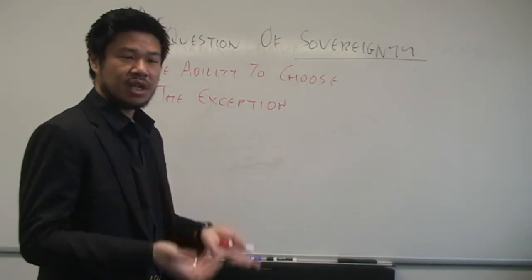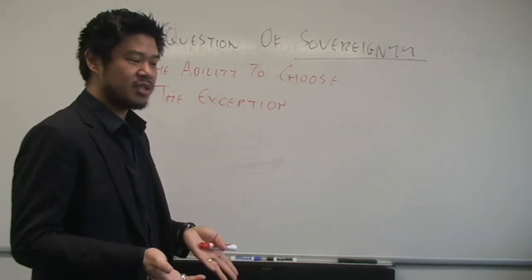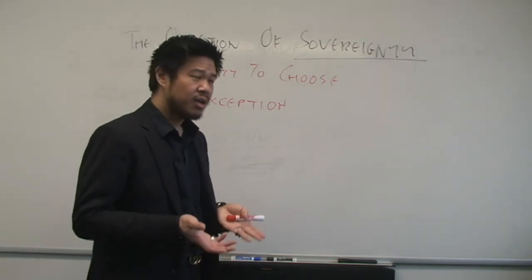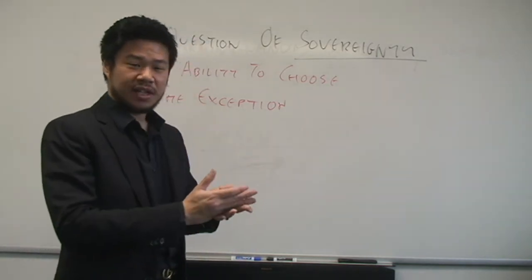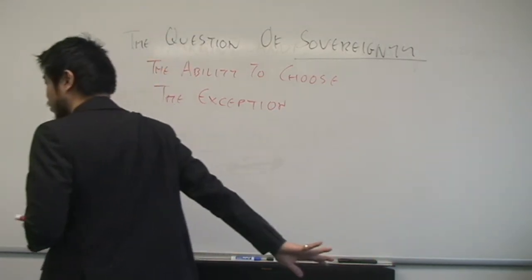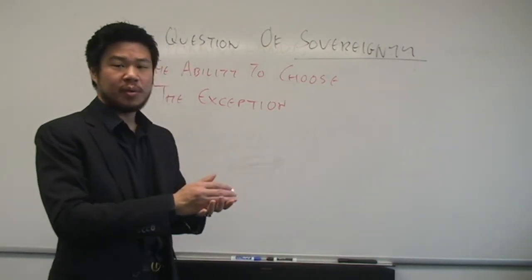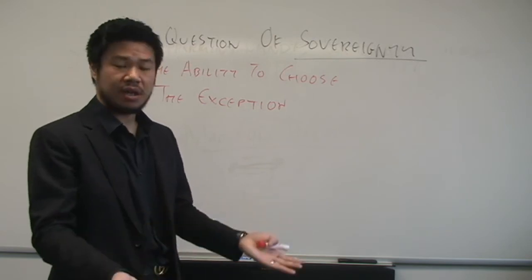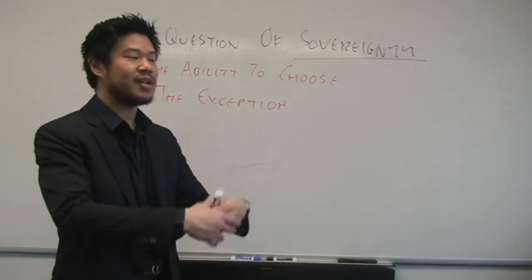But the moment you say 'sovereign' and 'the sovereign ability to choose the exception,' the other person goes 'huh, what?' And it creates that pause, which is the same pause that Youngho sort of turns away from. So that can be a moment where we can actually say, what are we talking about? Let's talk about it, let's suss it out.